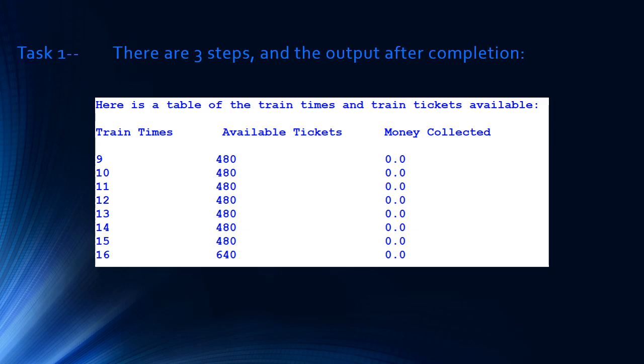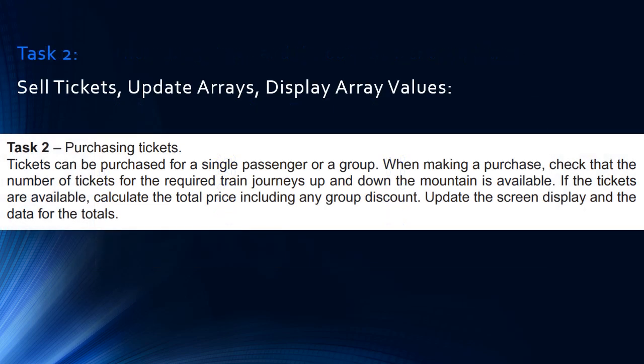Now we're on to Task 2: purchasing tickets. Tickets can be purchased for a single passenger or a group. When making a purchase, check that the number of tickets for the required train journeys up and down the mountain is available. If tickets are available, calculate the total price including any group discount — every tenth ticket is free. Then update the screen display and the data for the totals.